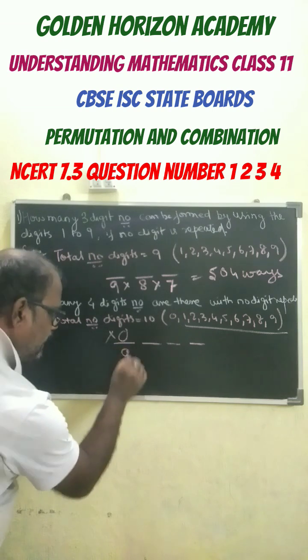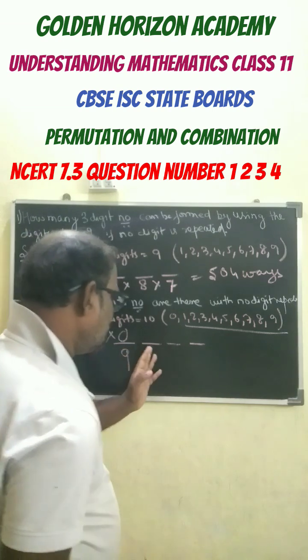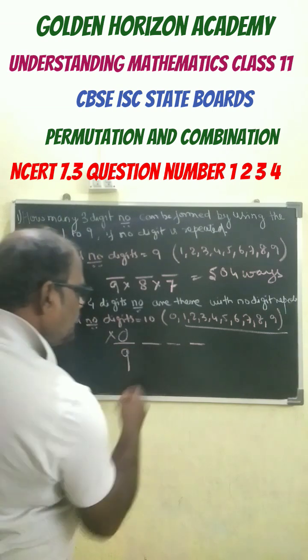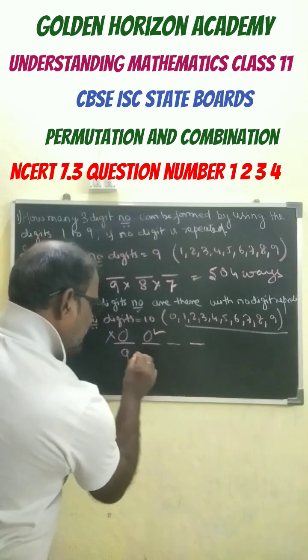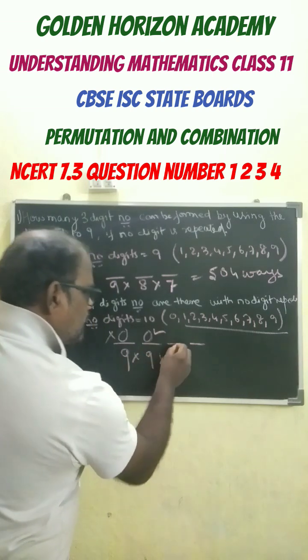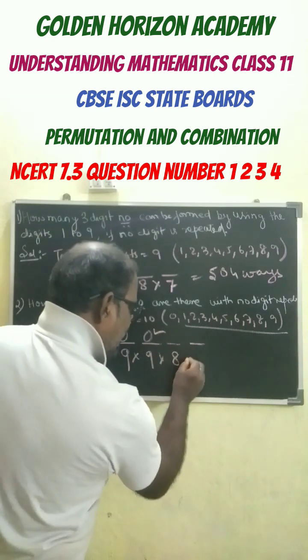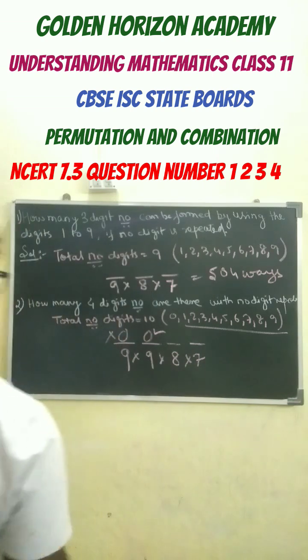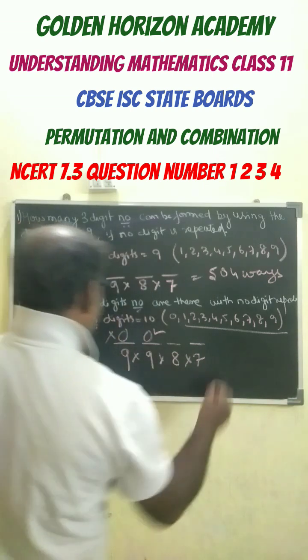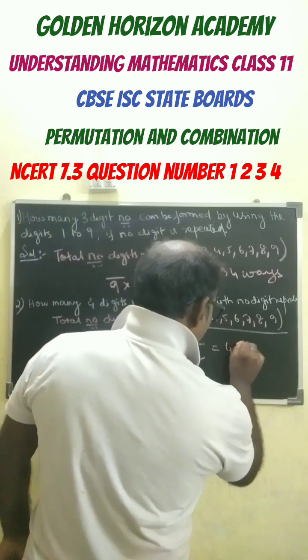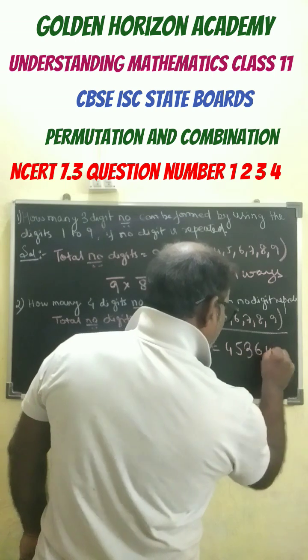In the second place, zero can now be put here, so we get nine again. Remaining is eight, then seven. So this is eight into seven, and we get 4,536 ways - 4,536 ways.